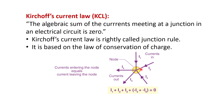Here you can see a node where i1, i2, and i3 are incoming currents, whereas i4 and i5 are outgoing currents. So you can write: i1 + i2 + i3 = i4 + i5, which means the current entering the node equals the current leaving the node.